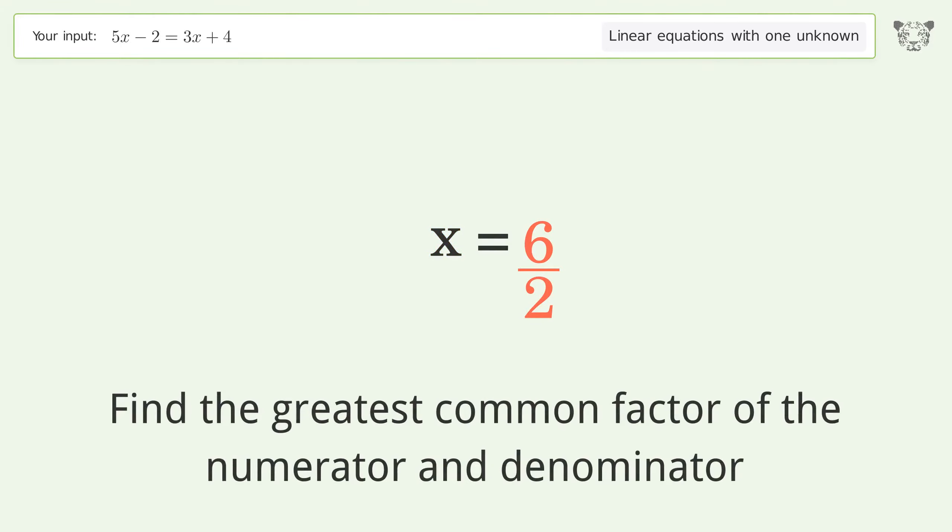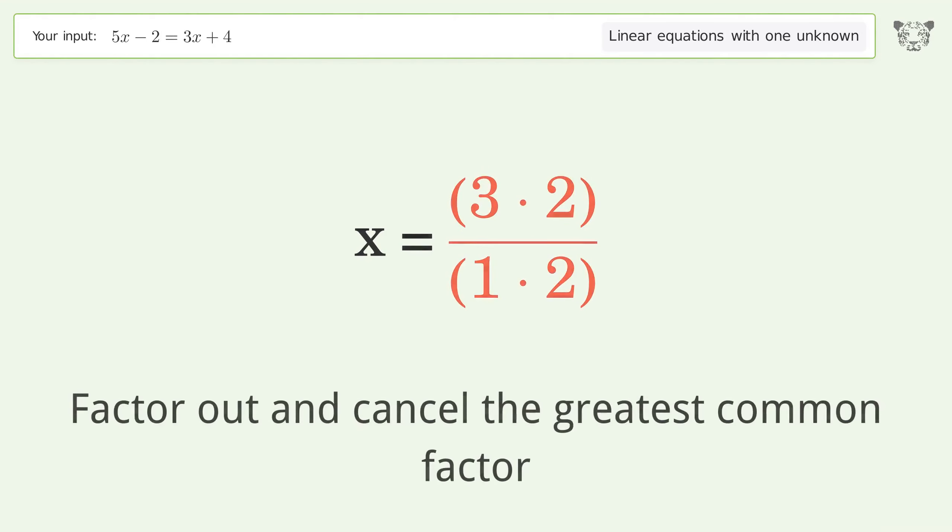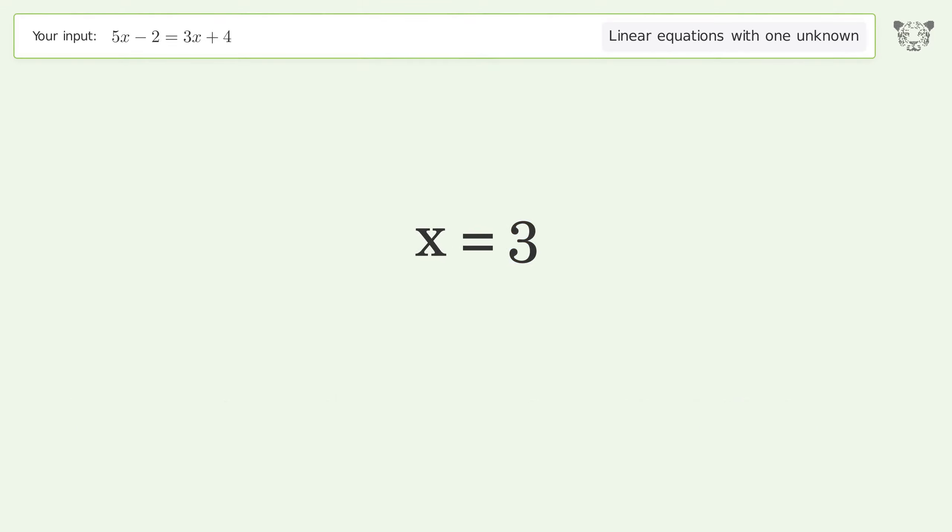Find the greatest common factor of the numerator and denominator. Factor out and cancel the greatest common factor. And so the final result is x equals 3.